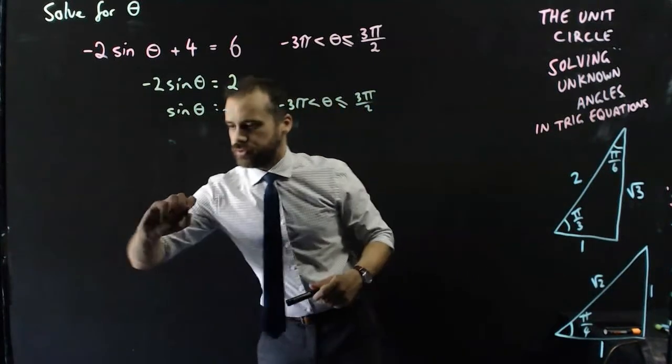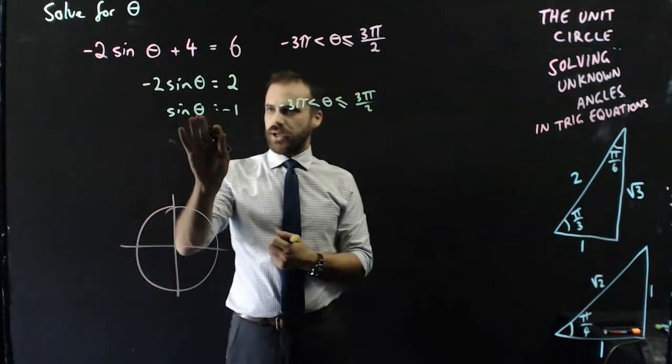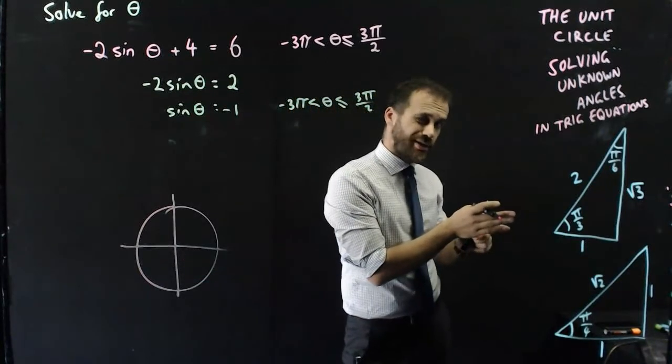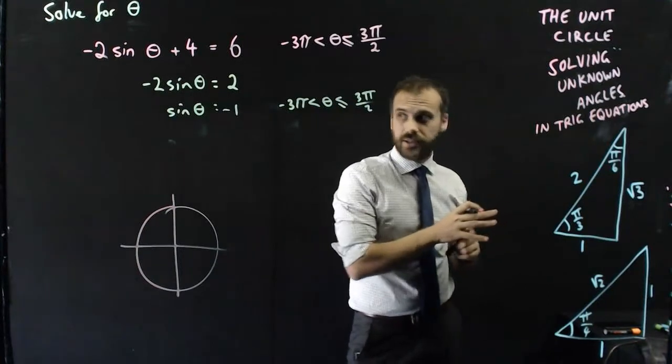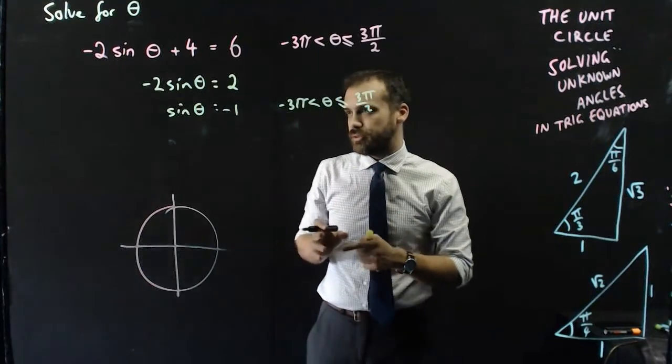We draw a unit circle, and then we say to ourselves, okay, what does theta need to be for that to be negative 1? You look at your standard triangles, and then you realize that standard triangles don't help here because negative 1 isn't one of those angles. It's actually a boundary angle.